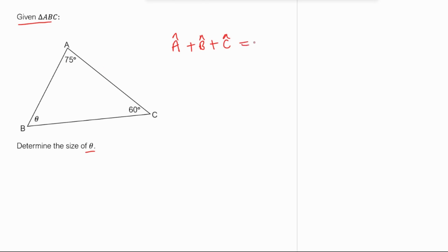Because this is sum of angles in a triangle, 75 degrees plus theta plus 60 degrees equals 180 degrees. Then 75 plus 60, that is 135. So 135 degrees plus theta is equal to 180 degrees.